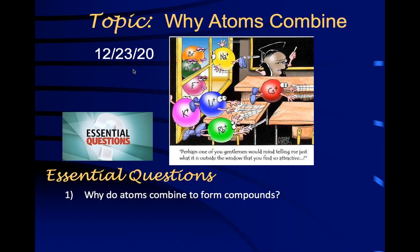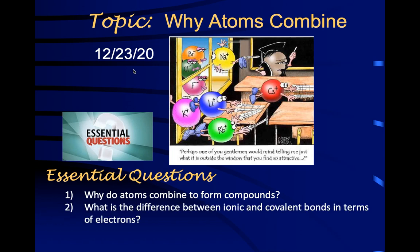Why do atoms combine to form compounds? We're going to answer that, because that's what explains why we have compounds — why isn't everything just an element? When atoms form compounds, they need to attach to each other, and those are called bonds. There's an ionic bond and a covalent bond, and the difference between them has to do with electrons. The third essential question: what is an oxidation number? Pause the video if you need to finish writing your essential questions.